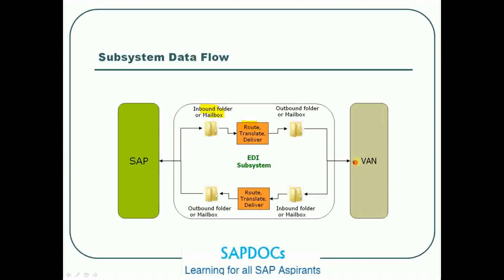On the incoming process, the VAN sends data to the inbound folder of the mailbox. It is then routed, translated, and delivered to the outbound folder or mailbox, and from there it reaches SAP. So the main function of the EDI subsystem is to route, translate, and deliver.